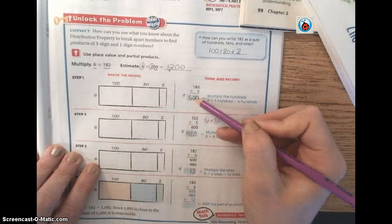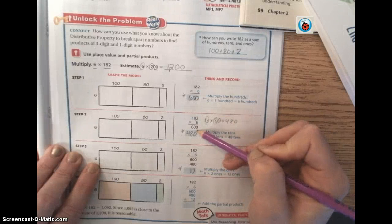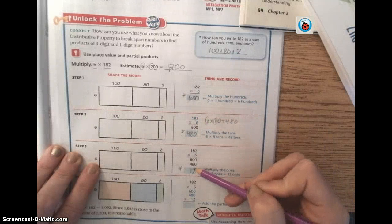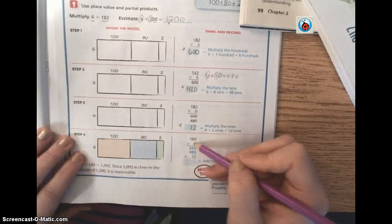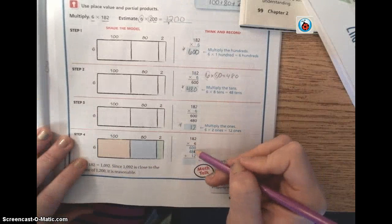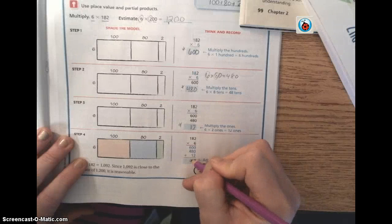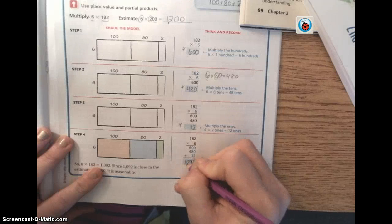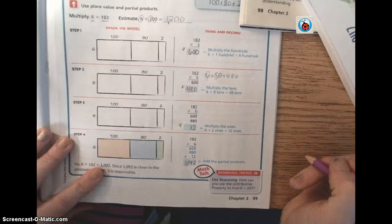So now we have one more number that we're going to add to our product. We're going to add 600, because that's what the hundreds place gave us. We're going to add 480, because that's what the tens place gave us. And we're going to add 12, because that's what the ones place gave us. And down here you can see they wrote that for you. 600 plus 480 plus 12. So go ahead and add those numbers together.